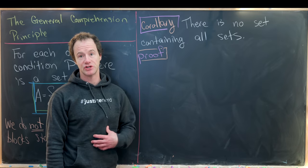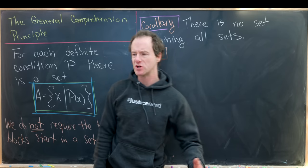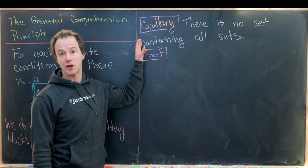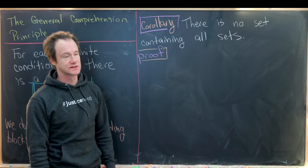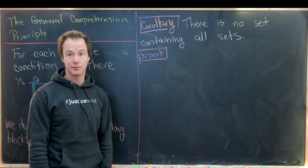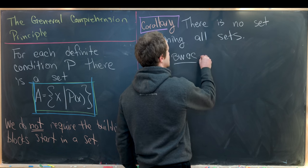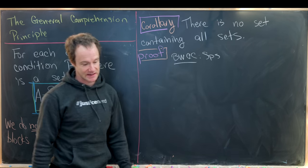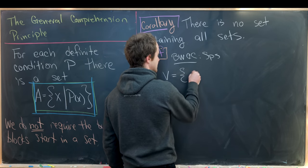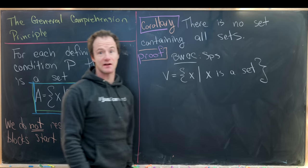So far, we've looked at the axiom of separation and its slight generalization, which was called the general comprehension principle, which turned out to be not a valid principle. Now we're going to use these ideas to prove the following corollary to Russell's paradox. And that is there is no set containing all sets. And we're going to do this with just a classic proof by contradiction. So let's by way of contradiction suppose that we do have a set of all sets. So that set would be described as follows: V equals x such that x is a set. This would be the set of all sets.